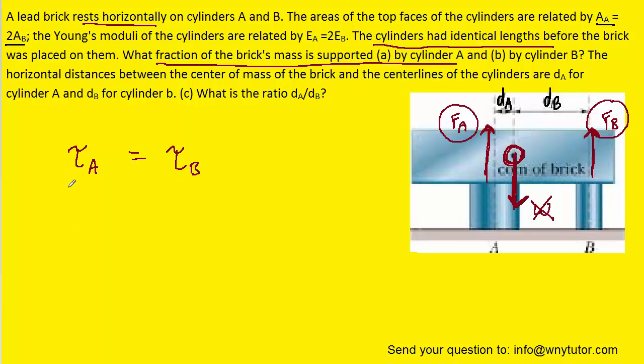We'll replace torque with the force times the distance for both torque A and torque B, then divide both sides by D sub B and by F sub A. From our earlier result, F sub A was equal to 4 times F sub B, so we can make a substitution whereby we replace FA with 4 FB.